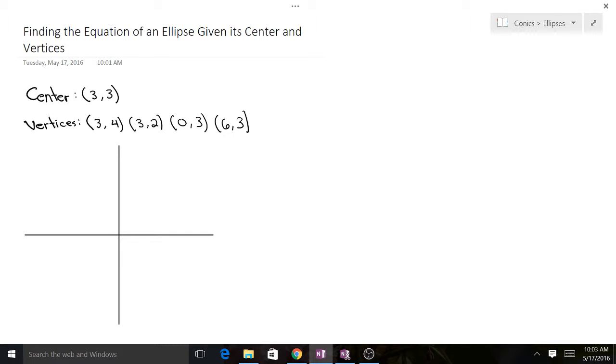So we have a center of 3,3. So this is the center of the ellipse. And we've got vertices of 3,4 and 3,2. That's one pair.